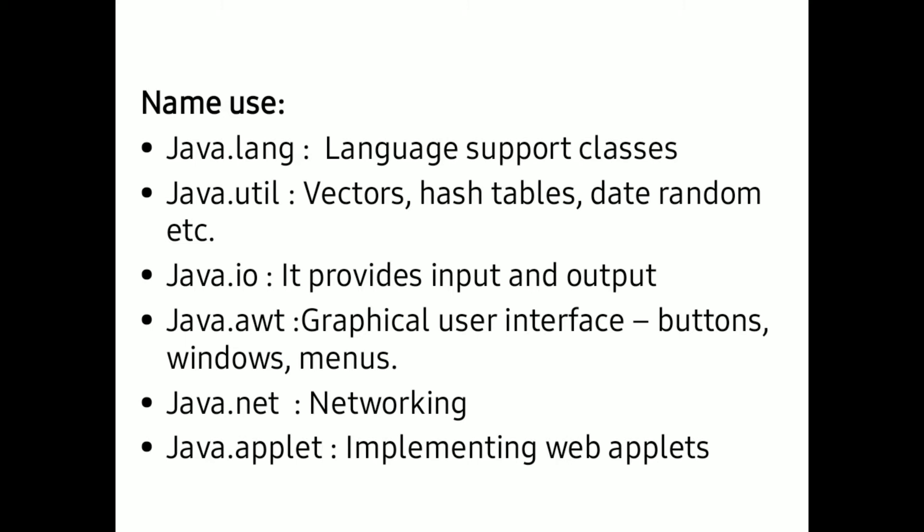When developing graphical user interfaces, we need graphical images, graphical icons, buttons, and windows. The classes related to developing buttons, windows, and menus for the graphical user interface are available in the awt package. Java.net package can be used for developing network-related programming and network-related applications.